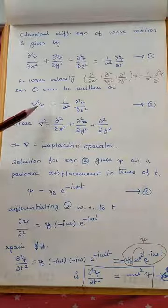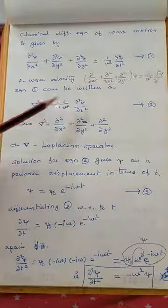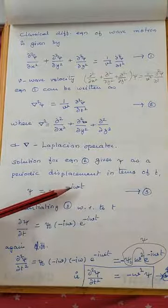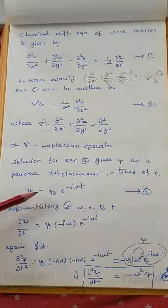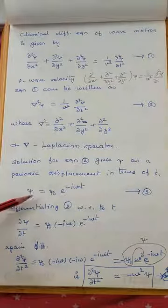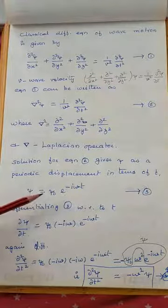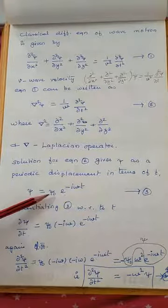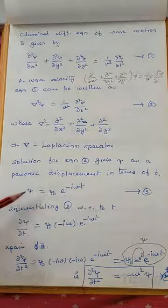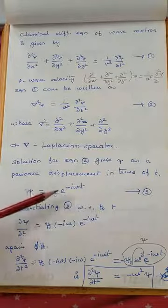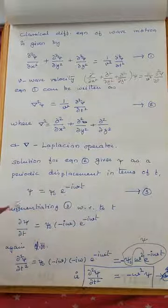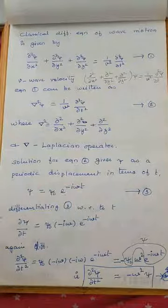The solution of this expression gives the value of ψ. ψ = ψ₀ · e^(−iωt). This is the general format for the solution of the second-order differential equation, where ψ₀ is the wave function at the instant t = 0. Differentiating this with respect to t: ∂ψ/∂t = ψ₀ · (−iω) · e^(−iωt).